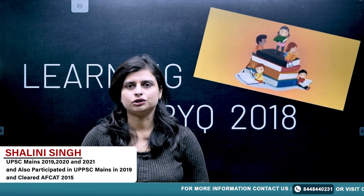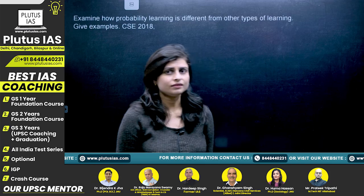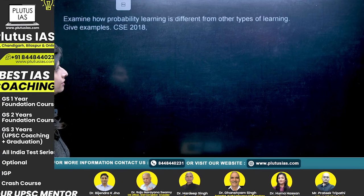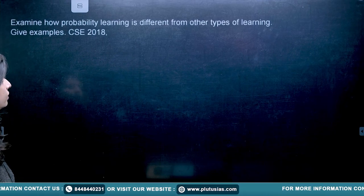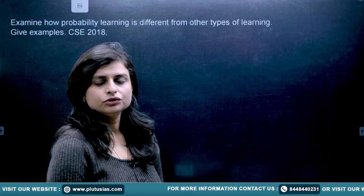Hello everyone, today we'll be discussing the previous year questions with respect to the topic of learning in psychology optional. In the year 2018 — earlier I have discussed questions from 2022, 2021, etc. — so today I'll be discussing 2018. Now let's see which are the questions. The first question is: examine how probability learning is different from other types of learning; give examples.